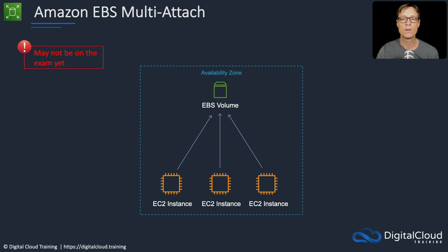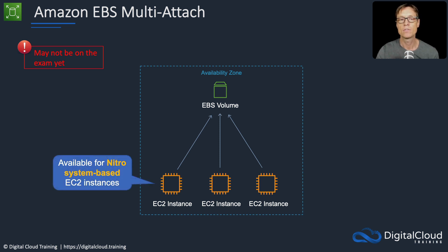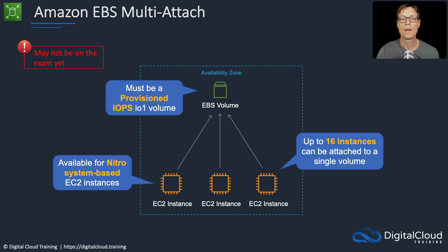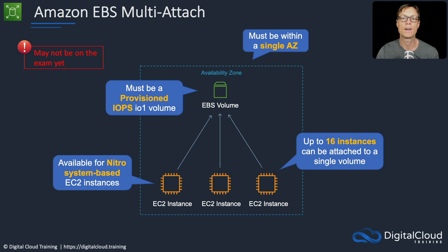Multi-attach literally means attaching multiple EC2 instances to a single EBS volume. There are some limitations: it's available for Nitro system-based EC2 instances, you can have up to 16 instances attached to a single EBS volume, and it must be a provisioned IOPS IO1 volume. The volume and instances must be within a single availability zone — this is not crossing availability zones.